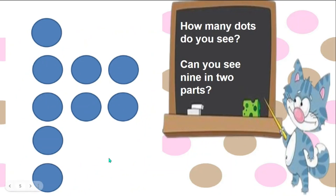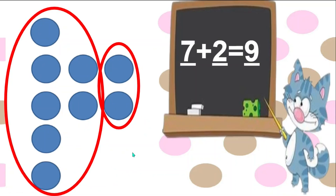How many dots do you see on this card? Can you see it in two parts? I can see it with a group of seven and a group of two dots.